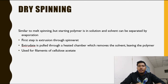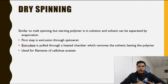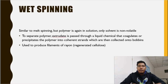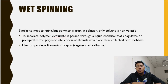Dry spinning is similar to melt spinning, but the starting polymer is in solution and the solvent is separated by evaporation. The first step is extrusion through the spinneret, and the extrudate is pulled through a heated chamber which removes the solvent, leaving the polymer. Used for filaments of cellulose acetate and acrylics. Wet spinning is also similar to melt spinning, but the polymer is again in solution, only the solvent is not volatile. To separate the polymer, the extrudate is passed through a liquid chemical that coagulates or precipitates the polymer into coherent strands, which are then collected onto bobbins. Used to produce filaments of rayon.